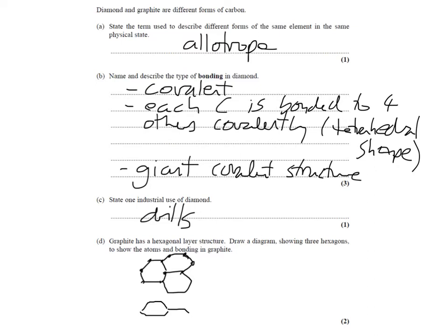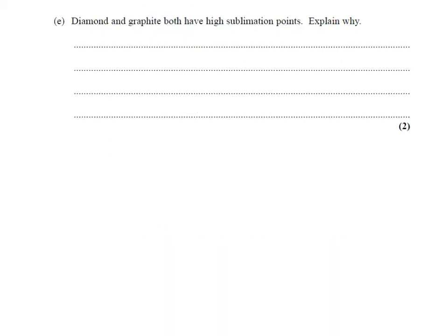Now, have we done everything the question has asked? Hexagonal layer structure, draw a diagram showing three hexagons to show the atoms and bonding in graphite. Well, we've drawn one, two, three hexagons there. We've actually drawn a bonus one and a half below it. You can see that I've lined up the hexagons so they look the same.